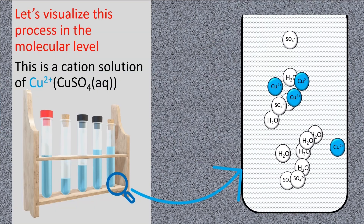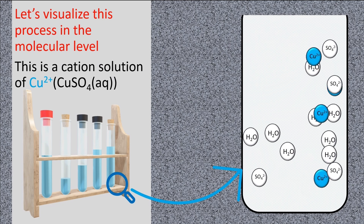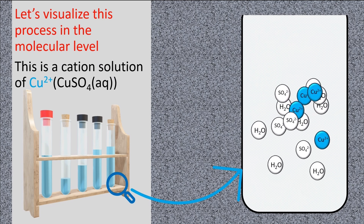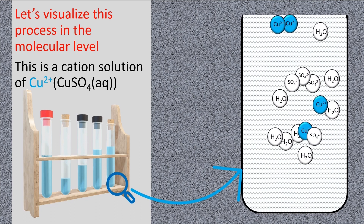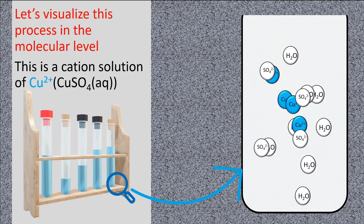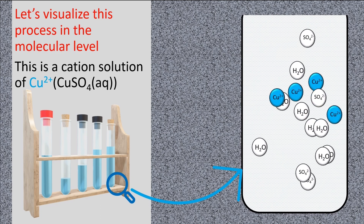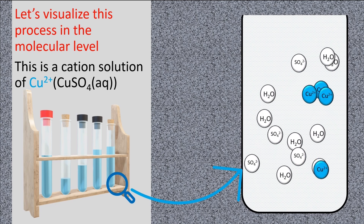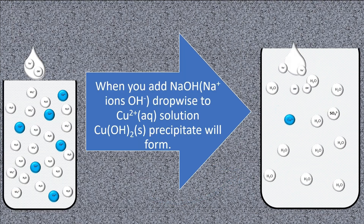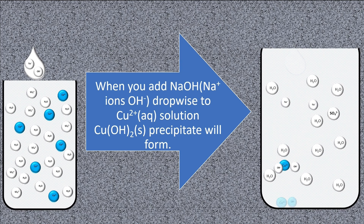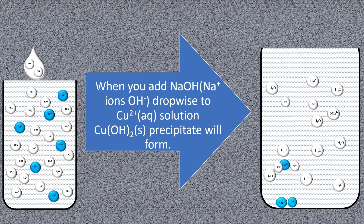Let's visualize this process at the molecular level. This is the cation solution of copper ions — copper sulphate solution. Copper 2+ ions and sulphate ions are randomly moving in the solution.